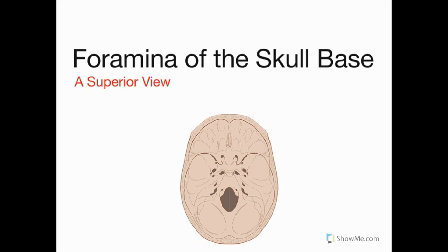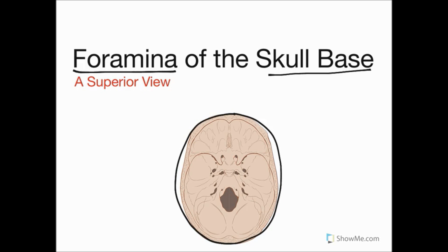Hello everyone, welcome back to Sutton Brain Hub. Today I would like to do a little presentation on the foramina of the skull base. When I say foramina, I mean a group of holes in the skull where structures like arteries, veins, or nerves go through. The term skull base refers to the region of the skull exposed when I take off the calvarium and look inside in a superior view. Hopefully this presentation will give you an insight into approaching the subject with a logical and systematic manner.